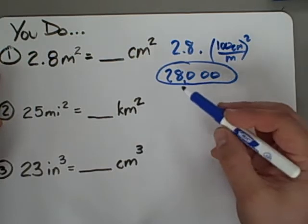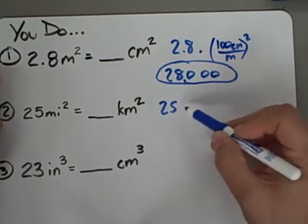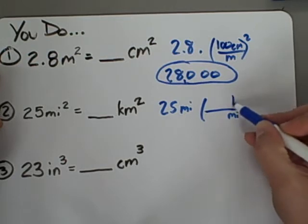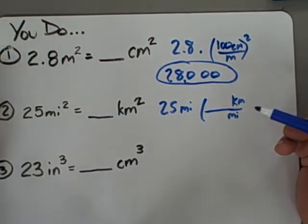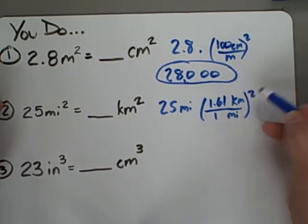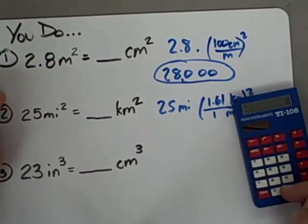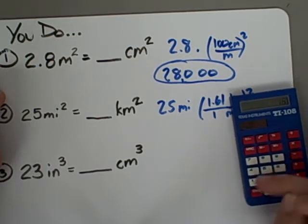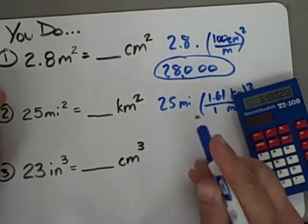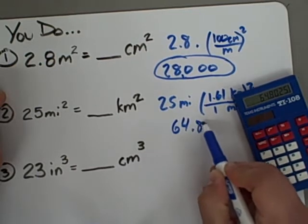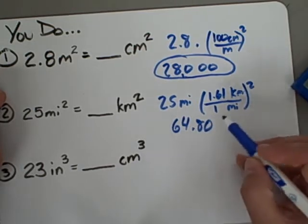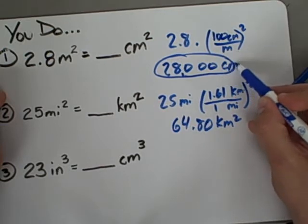All right. Miles to kilometers. We've got to do miles to kilometers. 25 miles. That's going to be miles on the bottom with kilometers on the top. According to the FCAT reference sheet, one mile is 1.61 kilometers. We're going to have to square that. So I do 1.61 times 1.61. Then we multiply the result by 25. And I get 64.8025, which rounded to the nearest hundredth would be 64.80 kilometers squared.